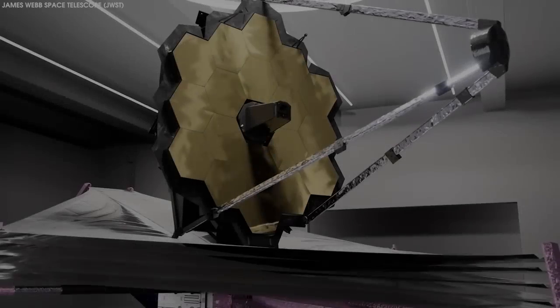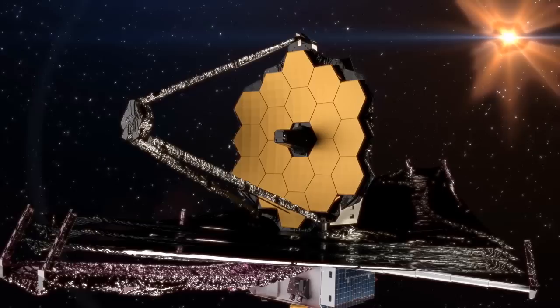With a primary mirror measuring 6.6 meters across, made from 18 gold-coated segments, the James Webb Space Telescope, or JWST, is a beautiful instrument in its own right.